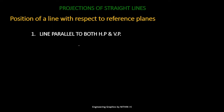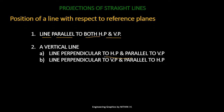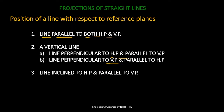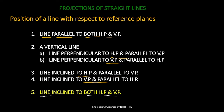The different positions of a line are: first, line parallel to both HP and VP; second, a vertical line — that is, line perpendicular to HP and parallel to VP, or line perpendicular to VP and parallel to HP; third, line inclined to HP and parallel to VP; fourth, line inclined to VP and parallel to HP. In terms of exam problems, the fifth position is the most important.